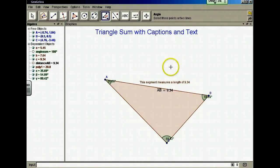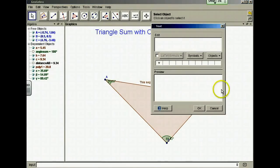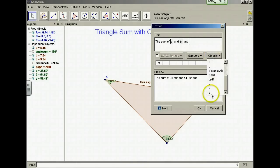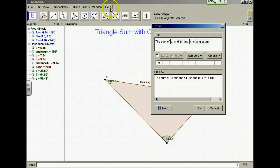Let's put this result into a text with variables. I will say the sum of alpha and beta and gamma is, and I want the variable angle sum, period. Here is a preview of what it says and here is my text.